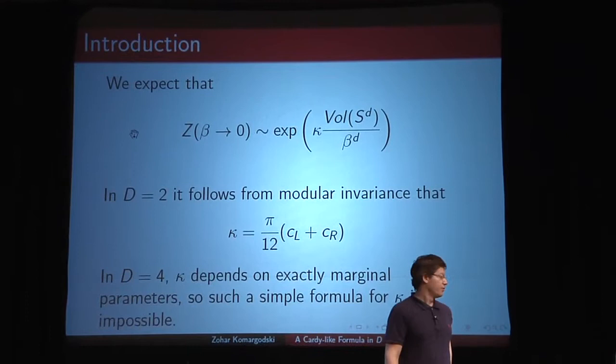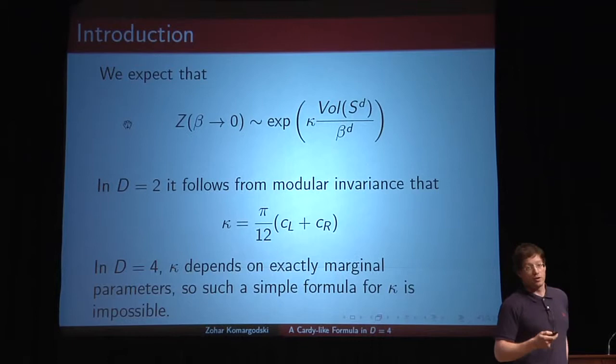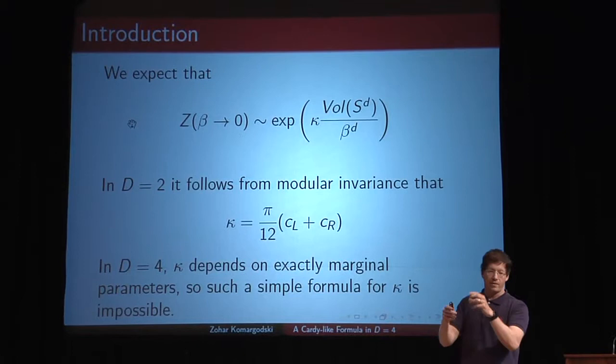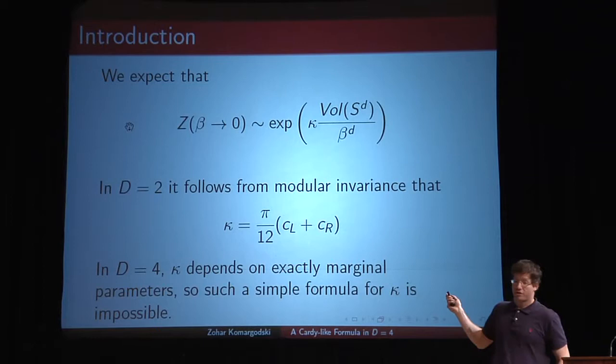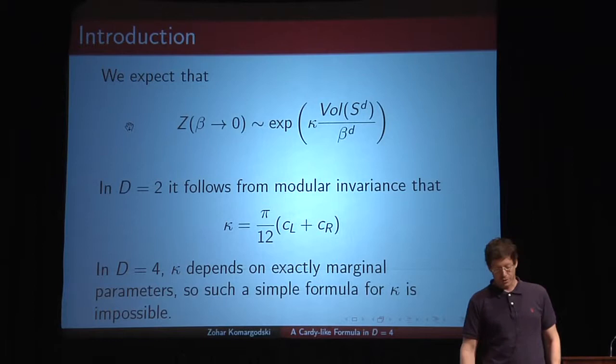If you take the temperature to be very large, so namely beta going to zero, it's easy to extract the asymptotic behavior of this partition function, because locally it looks like flat space times a circle. You expect to find something that goes like temperature to the power little d — in four dimensions, temperature cubed — times the volume of the D-dimensional sphere and some coefficient kappa.